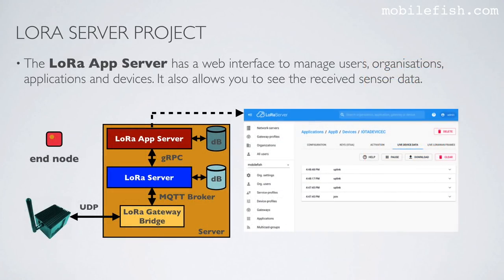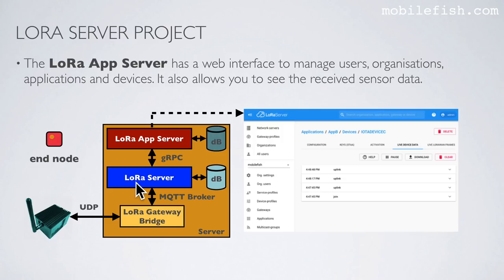The LoRaAppServer has a web interface to manage users, organizations, applications, and devices. It also allows you to see the received sensor data. The end node sends sensor data to the gateway; the gateway sends data to the LoRa Gateway Bridge; the LoRa Gateway Bridge publishes data to the MQTT broker; the LoRaServer receives data from the MQTT broker and sends it to the LoRaAppServer; the user can see the sensor data in the web interface.